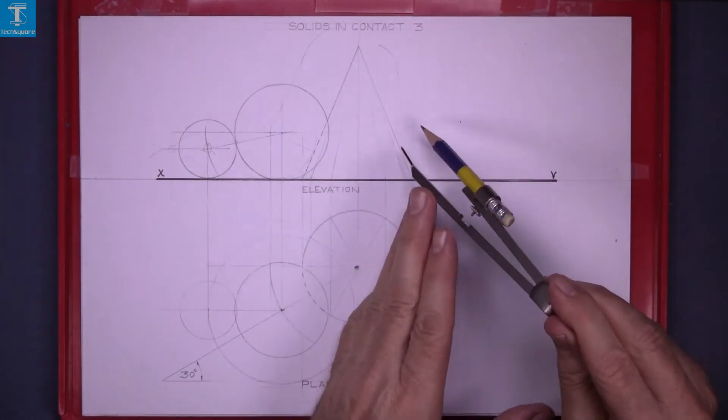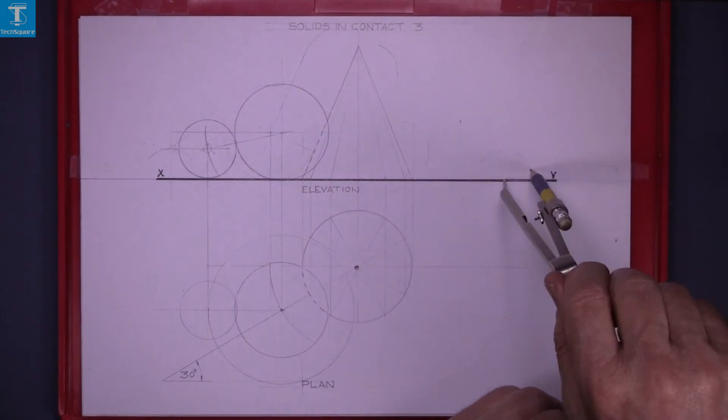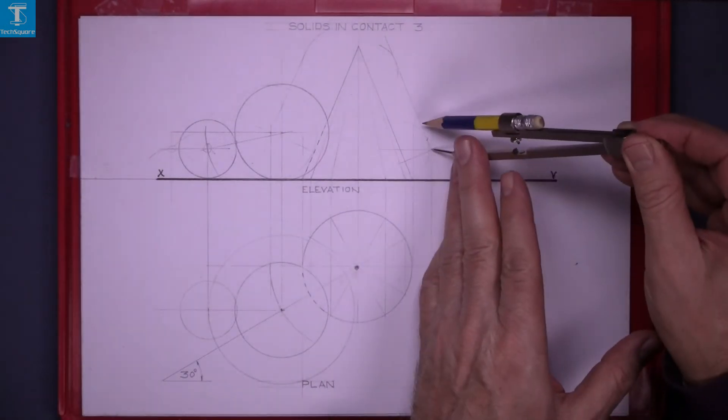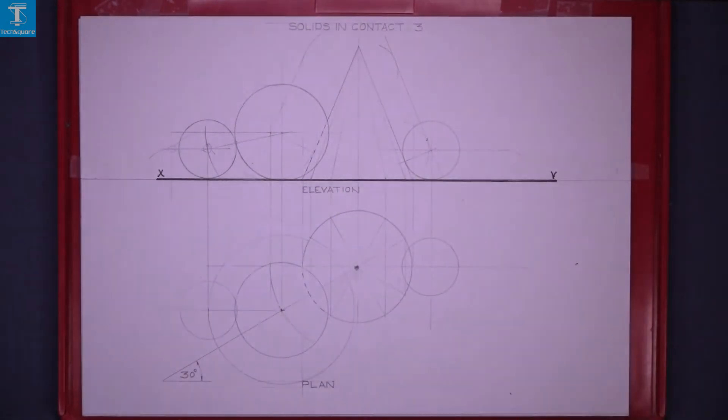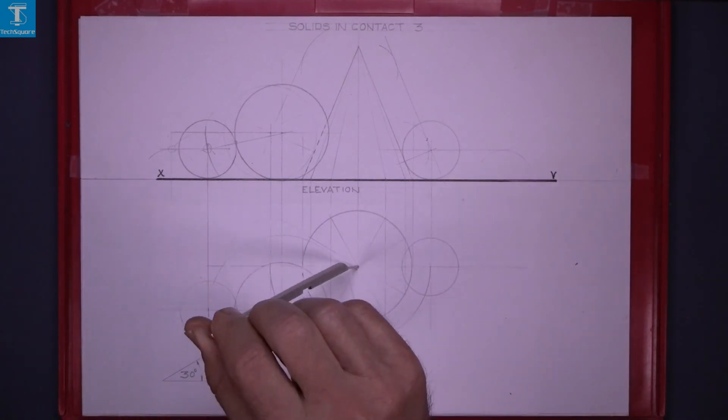So, find the centre as in Solids in contact 1 and draw in your elevation and project down and get the plan. Now using the centre of the cone, rotate the sphere around.